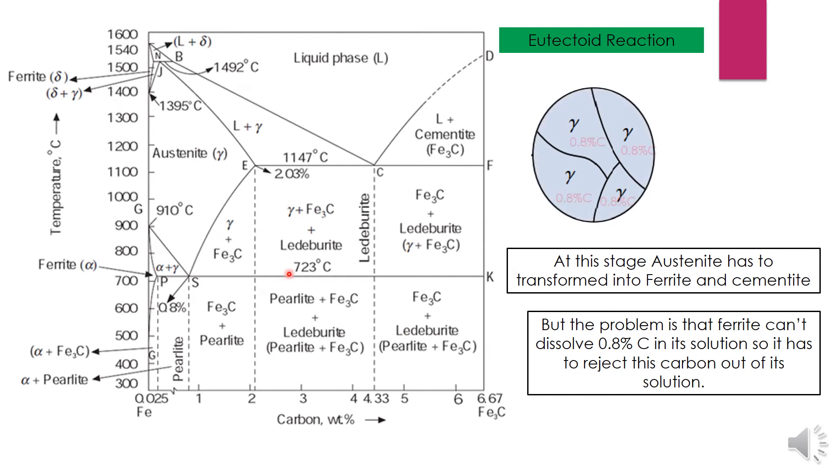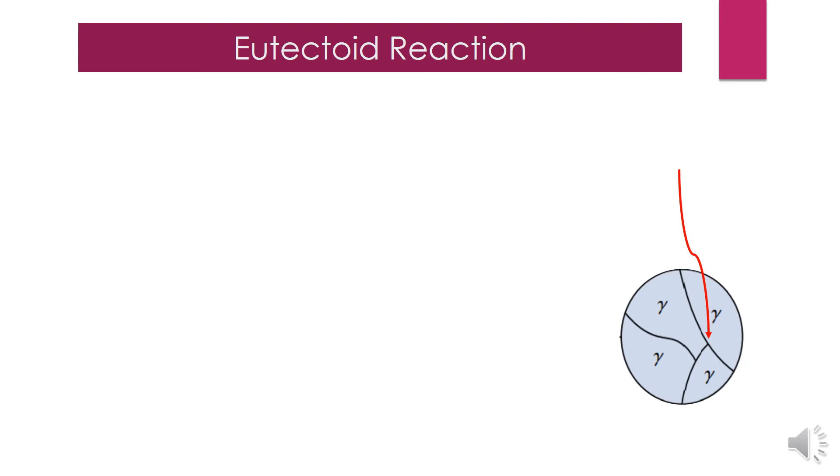At this stage, austenite has to transform into ferrite and cementite, but the problem is that ferrite cannot dissolve 0.8 percent carbon in its solution, so it has to reject this carbon out of its solution.